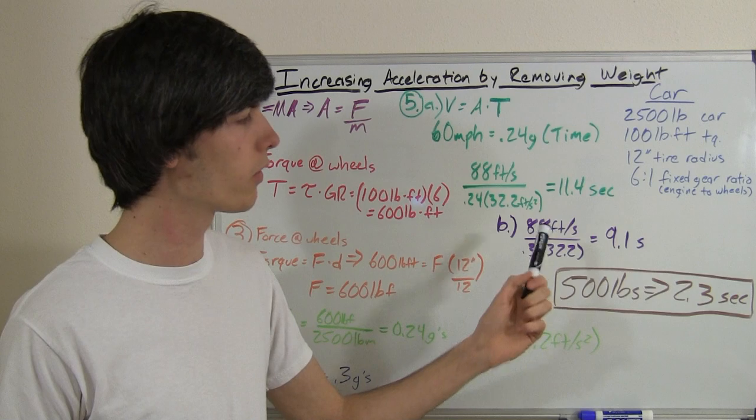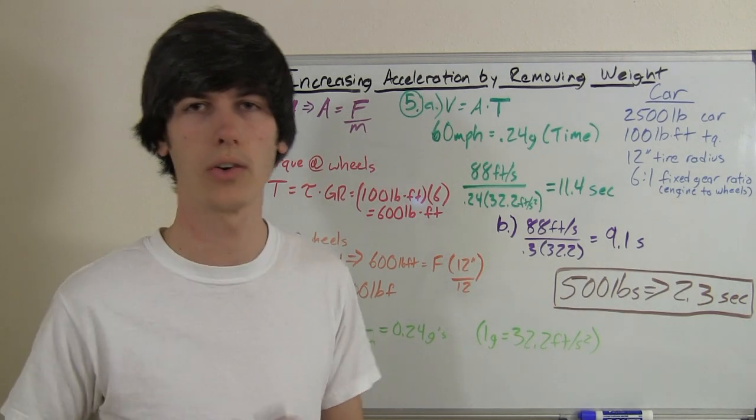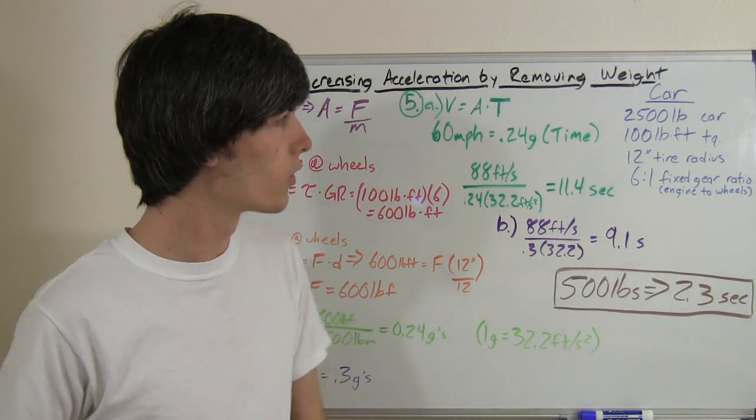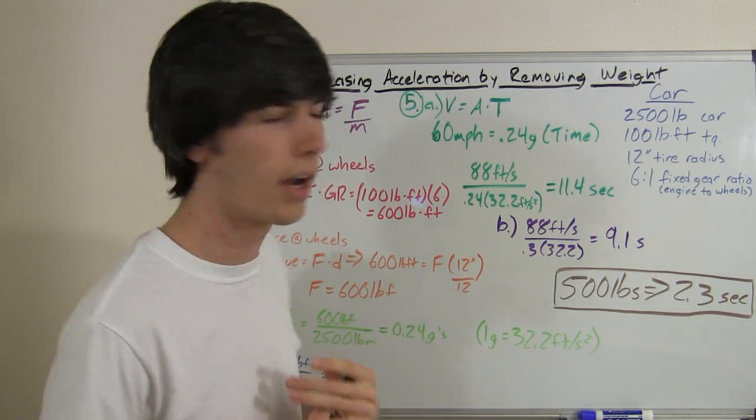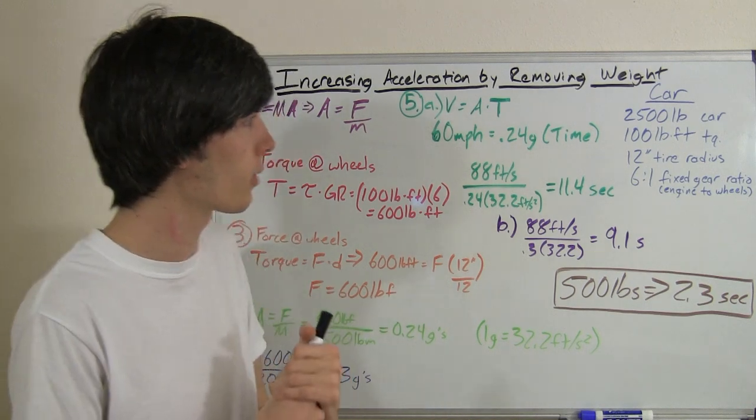So very cool. By removing 500 pounds from the car, we increased our 0 to 60 by 2.3 seconds. So that kind of gives you a look at how much the reality behind removing weight and why that's so important for acceleration.